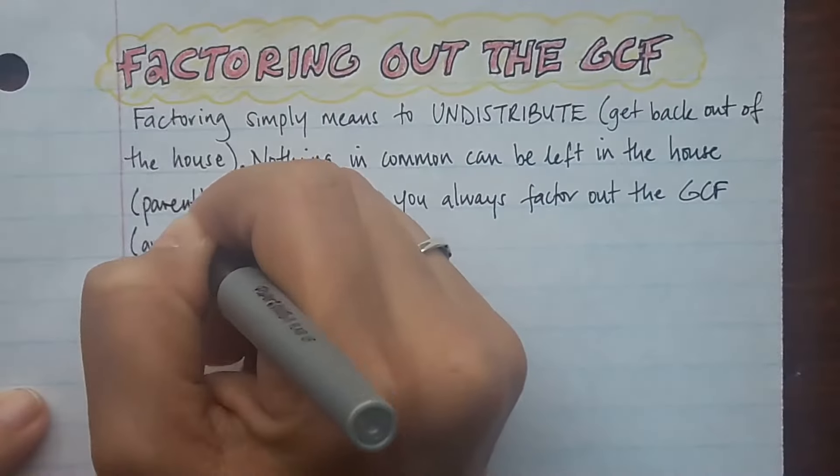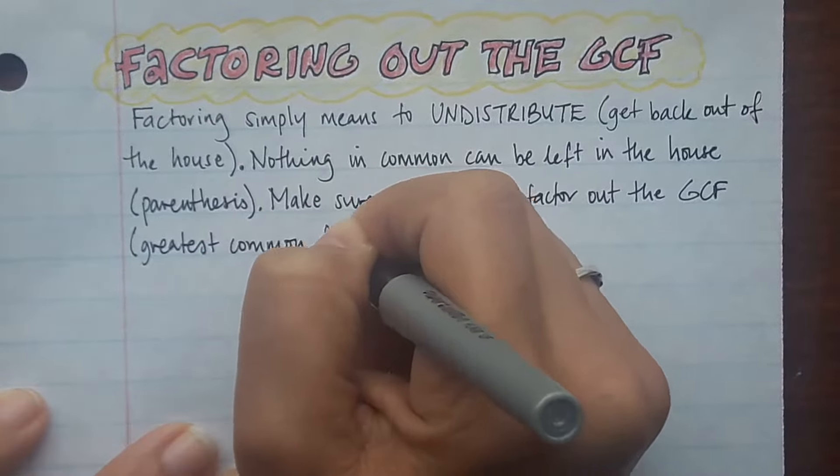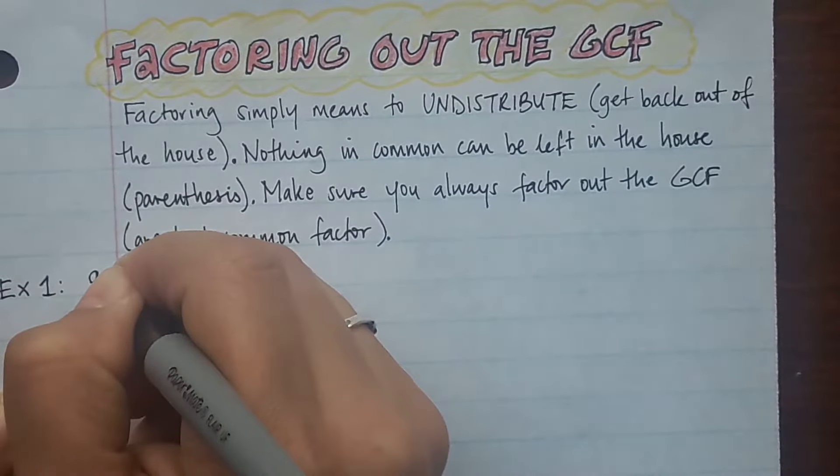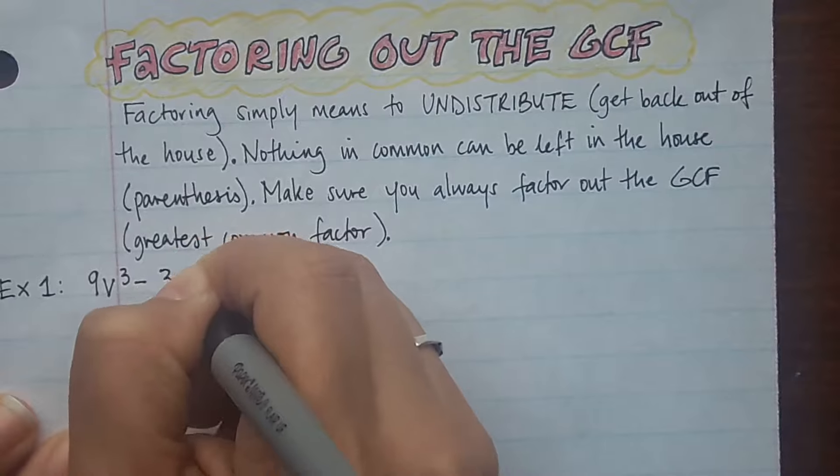This is a listening check. Underline the word undistribute. Let's take a look at an example. Let's say you had 9v³ - 3v².